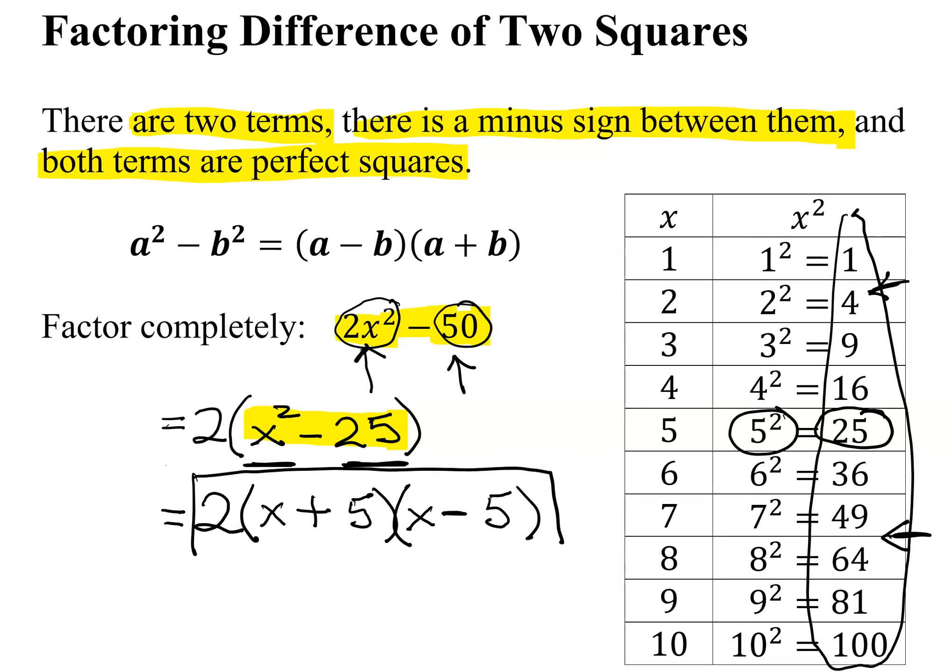It would have been equally correct to write x minus 5 before the x plus 5. So this is factoring our binomial completely. If I want to quickly check it, that's always a good thing to do. And to do it, you're going to foil out the binomial first. So I'm going to get x times x is x squared. x times negative 5 is minus 5x. 5 times x is plus 5x. And 5 times negative 5 is negative 25. Notice the middle two terms add to zero. So now all I have to do is distribute the 2 into that binomial. And I will get 2 times x squared is 2x squared. 2 times negative 25 is negative 50.